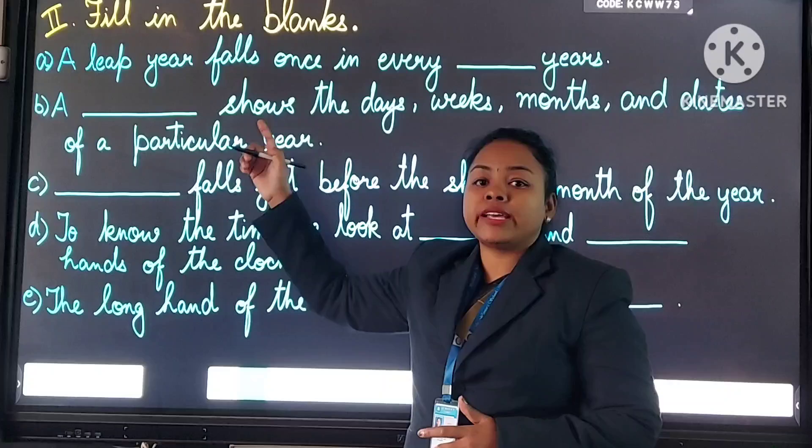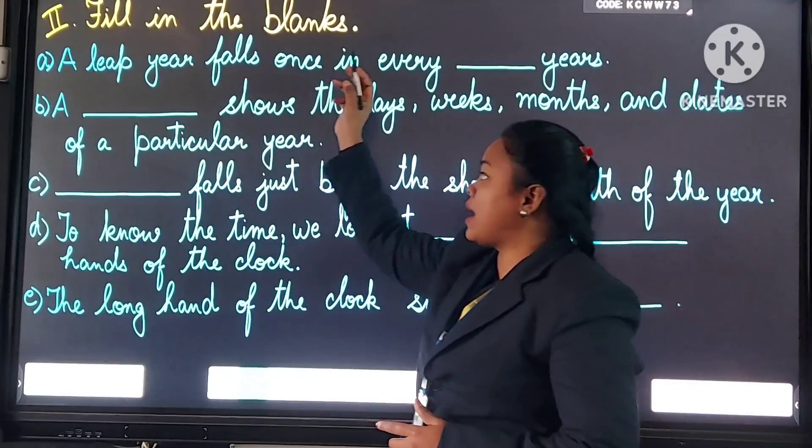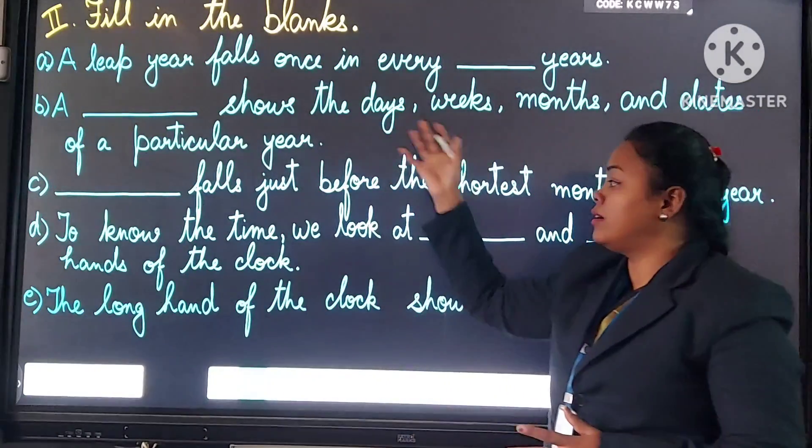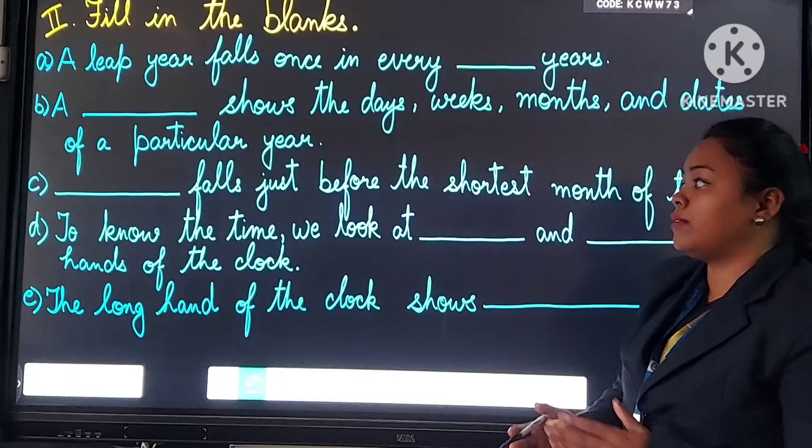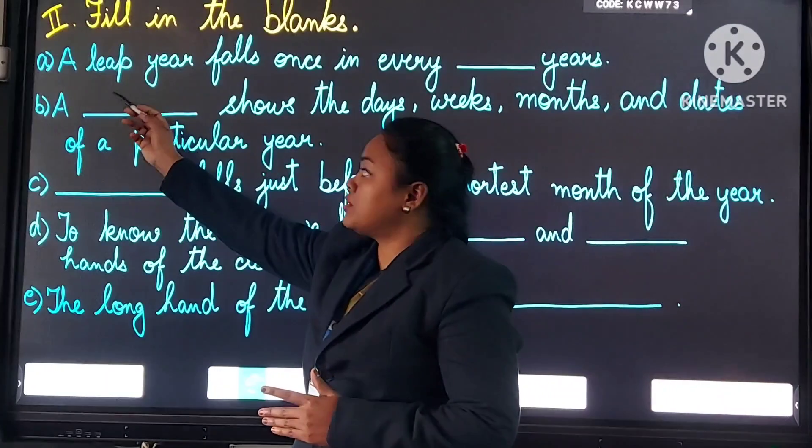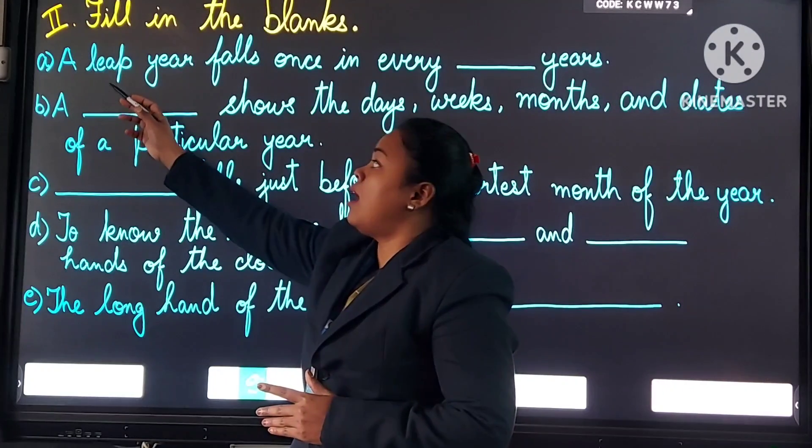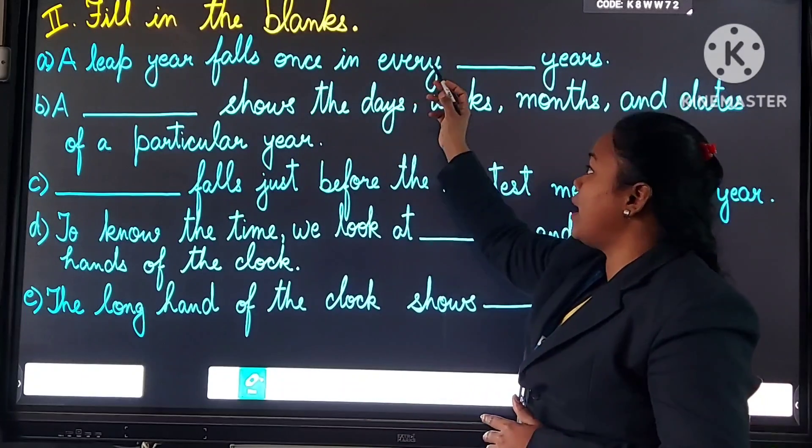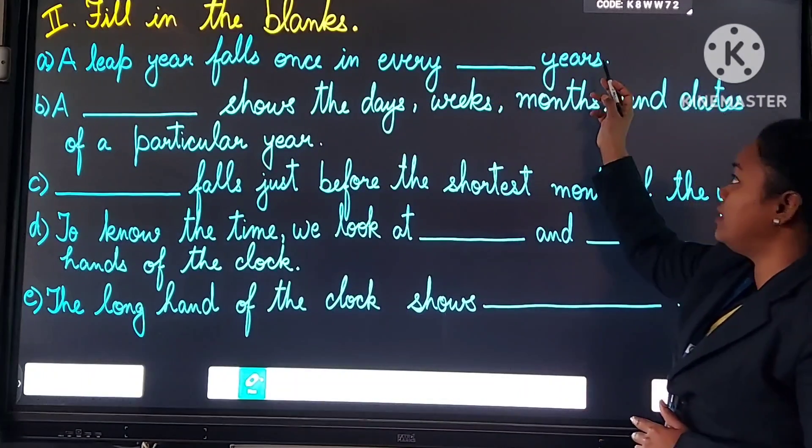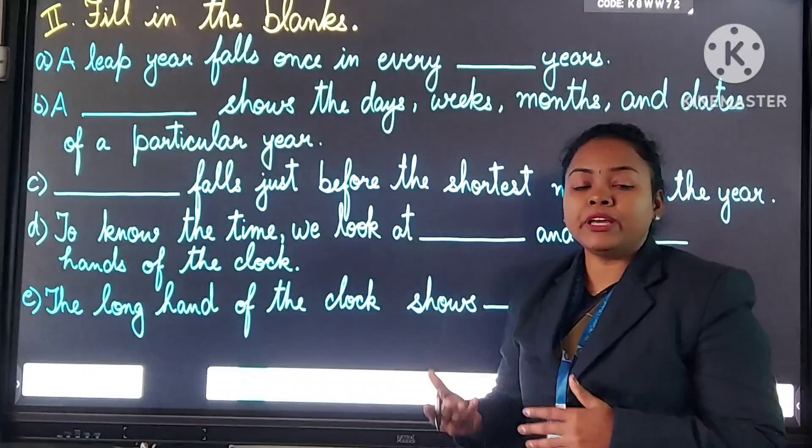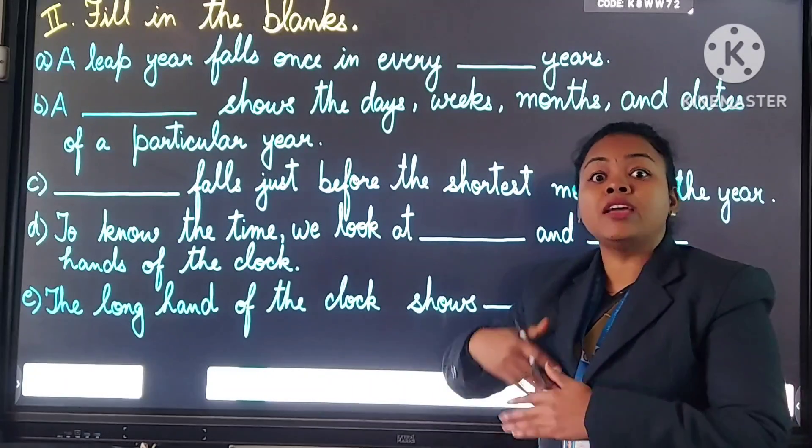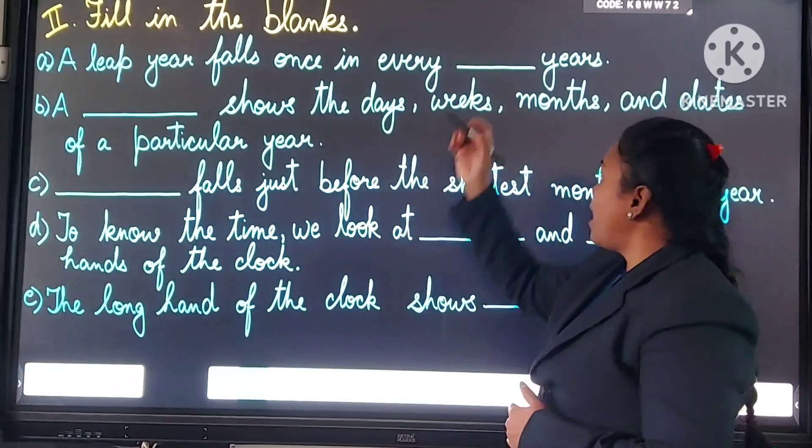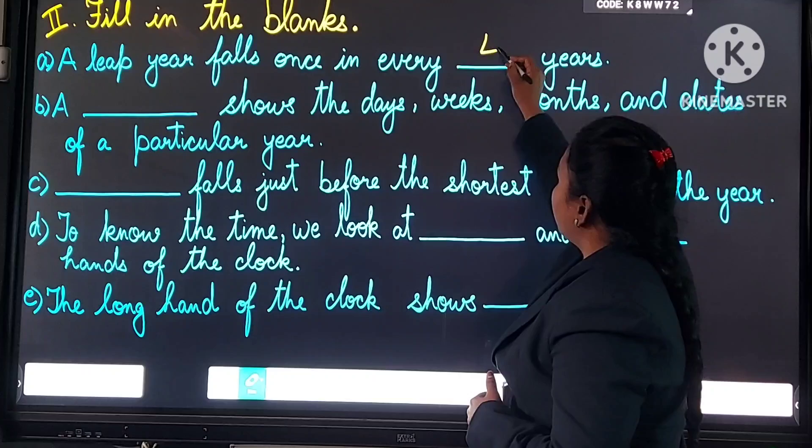Here is your second exercise. Fill in the blanks. You have to fill the given blanks here. Here is your question number A. A leap year falls once in every dash years. Leap year ka padhta hai 4 saal. Answer will be 4.